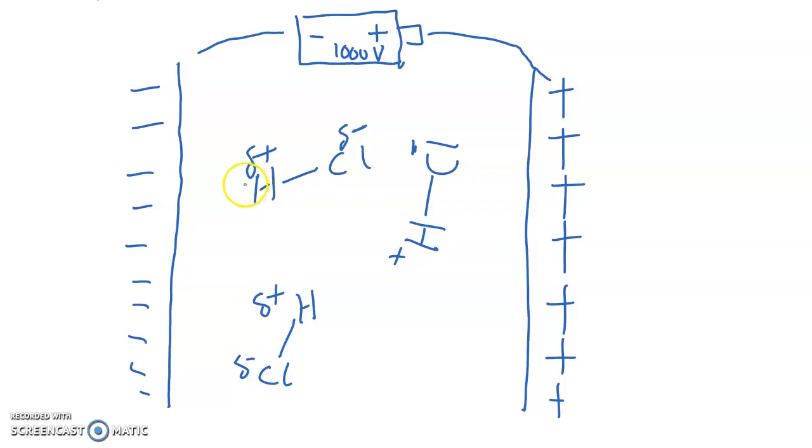So what happens? This molecule, the H that has a partial positive charge is going to go closer to the negative. Why? Because the opposite charge will tend to attract each other. So if you put electric field on, what happens? These three molecules, they will align together.